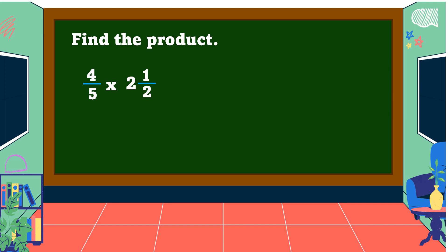To understand the steps, let's study some examples: 4/5 times 2 and 1/2. In multiplying a simple fraction by a mixed fraction, change the mixed fraction into an improper fraction. First, copy 4/5. Then change 2 and 1/2 into an improper fraction: multiply the whole number by the denominator — 2 times 2 is 4 — then add the numerator: 4 plus 1 is 5, and copy the denominator 2. Next, we use the cancellation method: 4 and 2 have a common factor of 2, so 4 divided by 2 is 2, and 2 divided by 2 is 1.